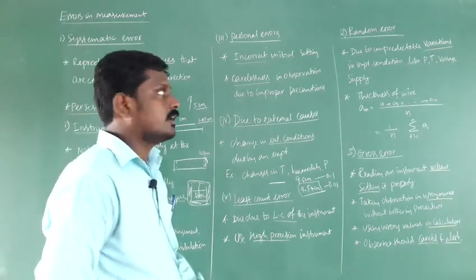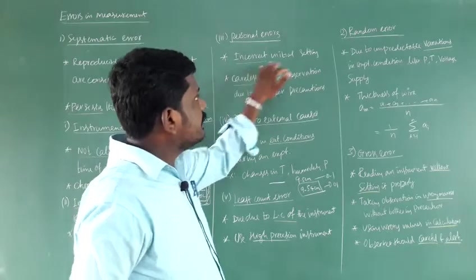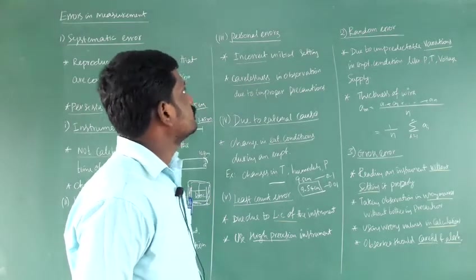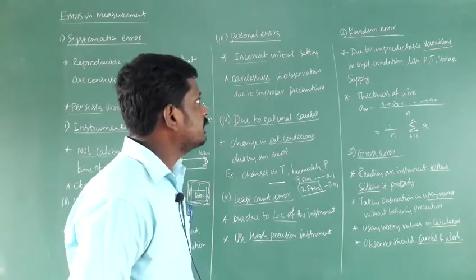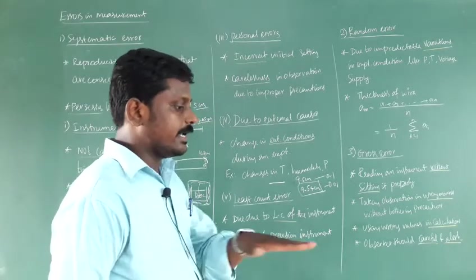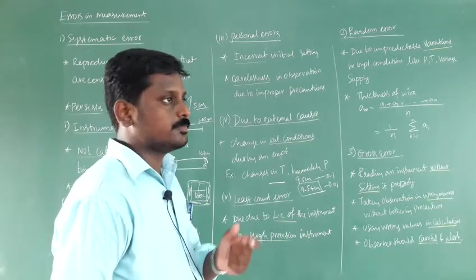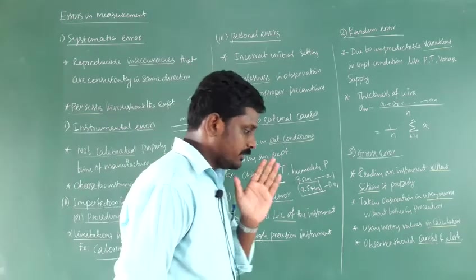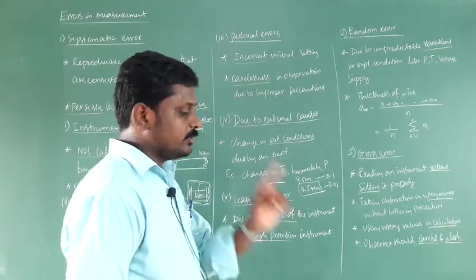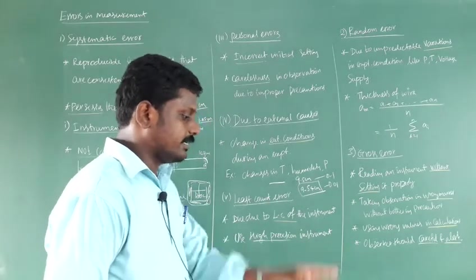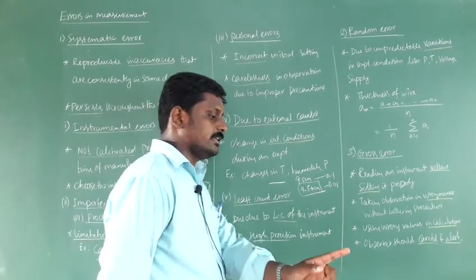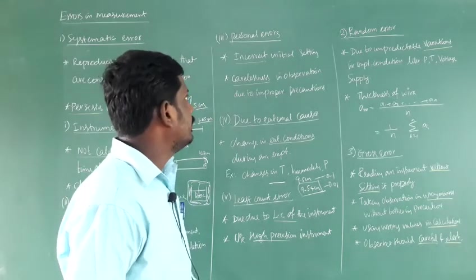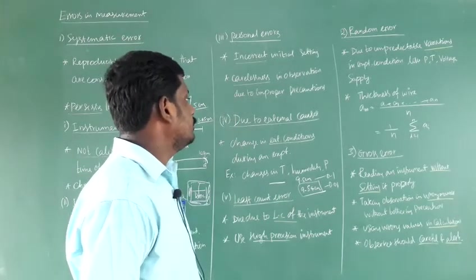The next sub-type is personal error — due to the individual, such as incorrect initial setting or carelessness in observation due to improper precautions. Some experiments need a horizontal surface, so you need to use a spirit level. You need to observe the correct value; your eye contact and the reading should be in a straight line. If you look from the left or right side, your reading will vary from 0.1 to 0.2 centimeters. Carelessness should be avoided to reduce personal error.